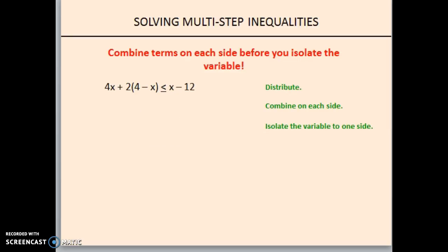Even more complicated. Don't forget to distribute first and then combine on each side of the inequality before you start isolating the variable. If you want to pause the video now and give it a try on your own, do that now. Okay. Let's see how this goes. We're going to distribute first. This is going to be 2 times 4 and 2 times, let's not forget, what's in front of this x is the invisible 1. So, it's going to be 2 times negative 1. What we get is 4x plus 8 minus 2x is less than or equal to x minus 12.